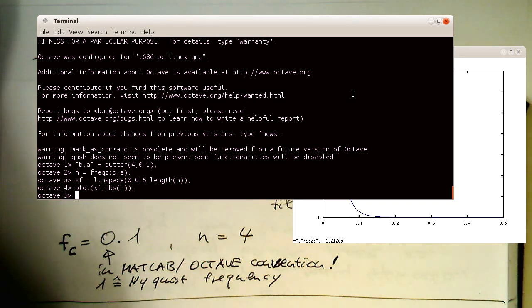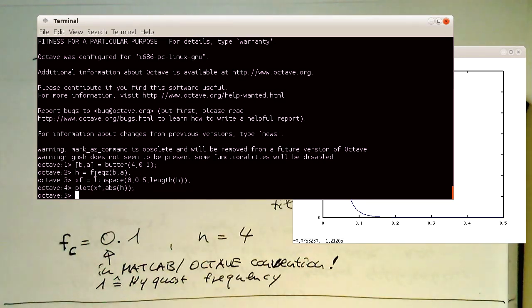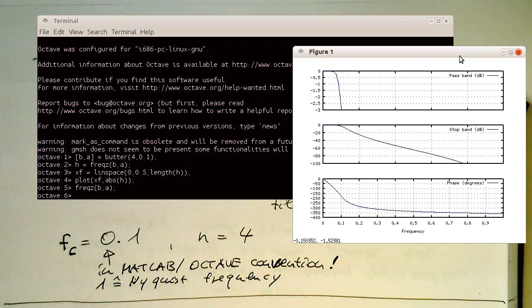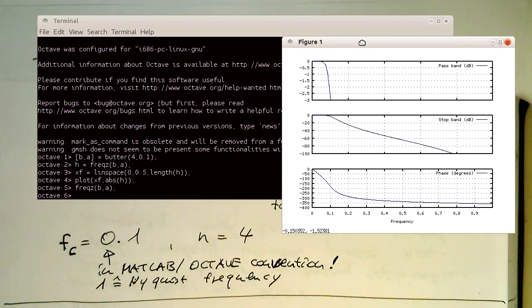So now I'm using this frequency Z command here without the H, and then let's see what we get through this. And without any output here, this command generates us these three plots here.